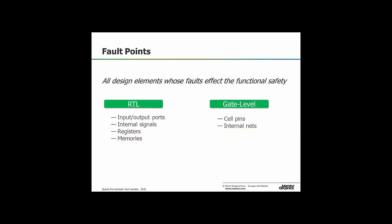Talking about fault points — where are we really looking? At RTL level it could be input and output ports, internal signals, registers, or memories. RTL analysis is usually done for bug hunting, proving functional correctness of the safety mechanism. Gate level is more towards the back-end for final verification sign-off. Customers are primarily more interested in registers and memories, as internal signals can change or disappear through synthesis. At gate level we're down at the cell level, looking at pins and nets.